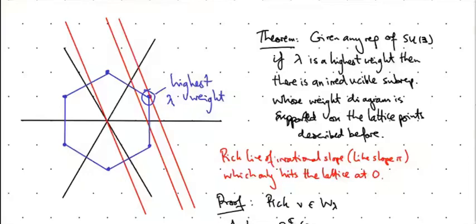Okay, so coming back to the theorem, what I've proved is given any representation of SU(3), you pick a highest weight using this line of irrational slope, and then you generate an irreducible subrepresentation by applying E_IJs, which are on the left of this line of irrational slope.